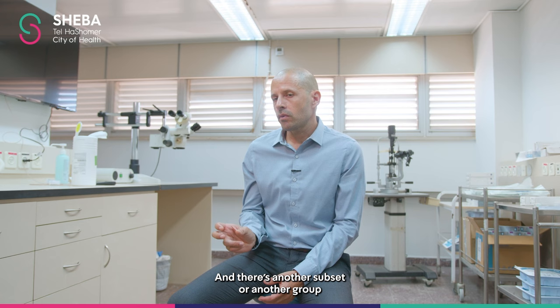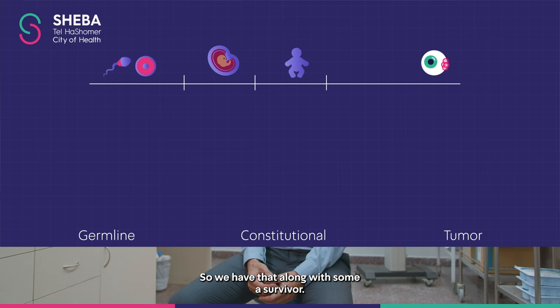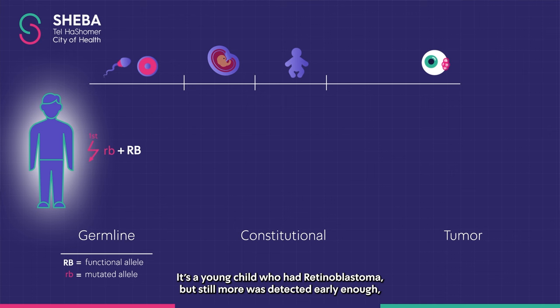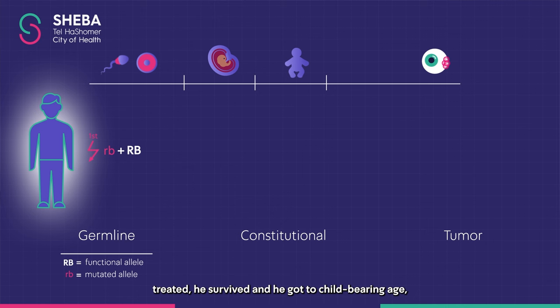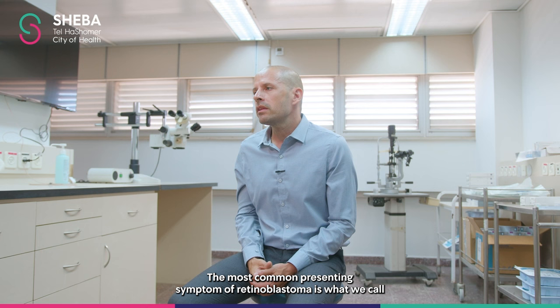There's another group, part of the germline cases, where the disease can be inherited — that's called familial retinoblastoma, or a child with a positive family history. A retinoblastoma survivor, detected early and treated, survives to childbearing age, and then passes on that one mutated gene to their child. That newborn then develops the second hit and develops the disease.